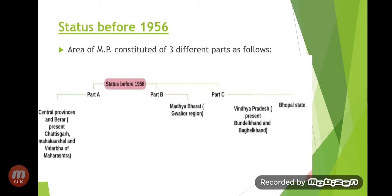Next is the status before 1956. The area of MP was constituted of three parts: Part A, Part B, and Part C.